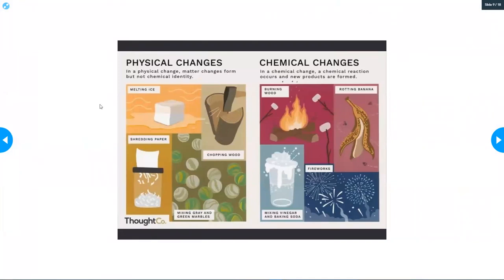Physical changes. In a physical change, matter changes form but not chemical identity. So when ice melts, that's physical. Chopping wood is physical. Mixing gray and green marbles, that's physical. Shredding paper is physical.